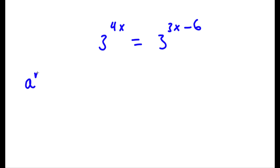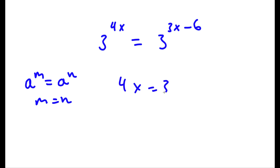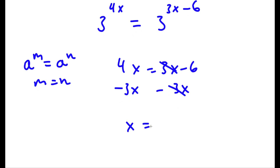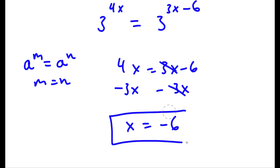Now, if I have something in the form a to the power of m is equal to a to the power of n, then this means that m is equal to n. So in this case, 4x is equal to 3x minus 6. All I have to do to solve this is subtract 3x on both sides, so these two cancel out, and I'm left with x is equal to negative 6. So this is my answer.